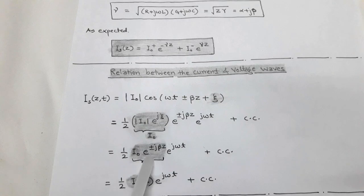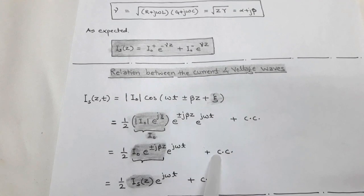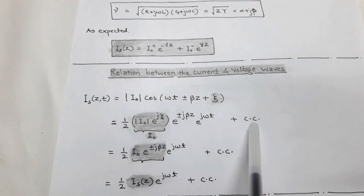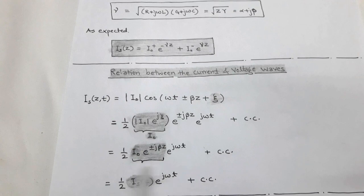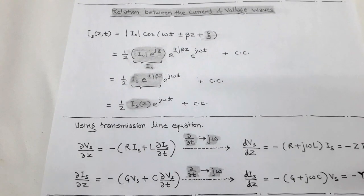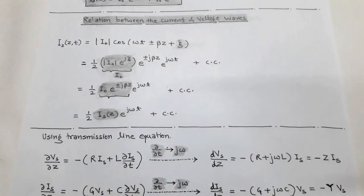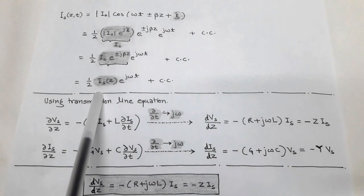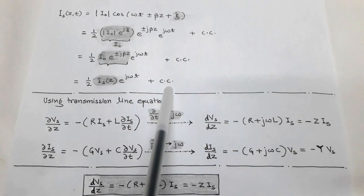The equation becomes I_s(z,t) = ½·I₀·e^(±jβz)·e^(jωt) + complex conjugate (c.c.), since converting the cosine gives a first term and its complex conjugate. The term I₀·e^(±jβz) is denoted as I_s(z), called the phasor current. So the phasor current is I_s(z) and the real instantaneous current equals ½·I_s(z)·e^(jωt) + c.c.